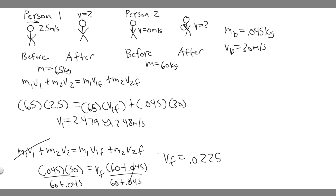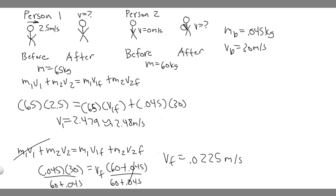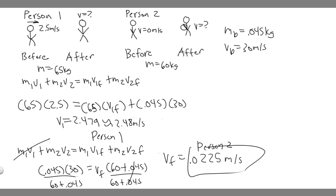So v_final ≈ 0.0225 meters per second. This logically makes sense — if you're hit with a snowball, you're not going to be traveling very fast; it really doesn't make you move much at all. So our two answers are: person one moves at 2.48 m/s and person two moves at 0.0225 m/s after the snowball is exchanged. Hopefully you found this useful.